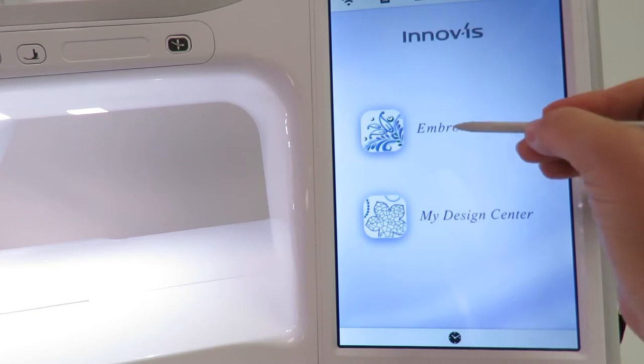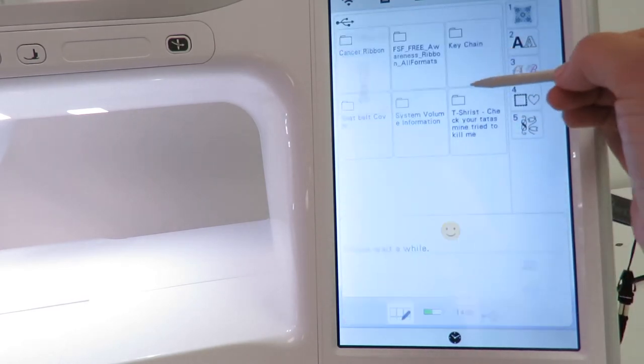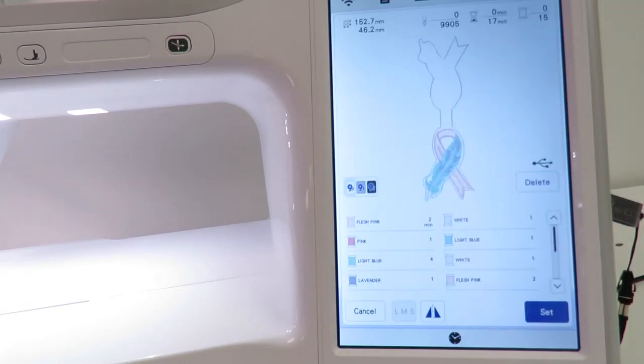Open the embroidery screen of the embroidery machine. Navigate to your USB and find the embroidery design of the keychain. Select the design.